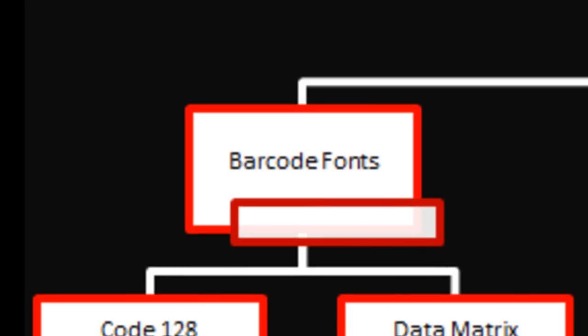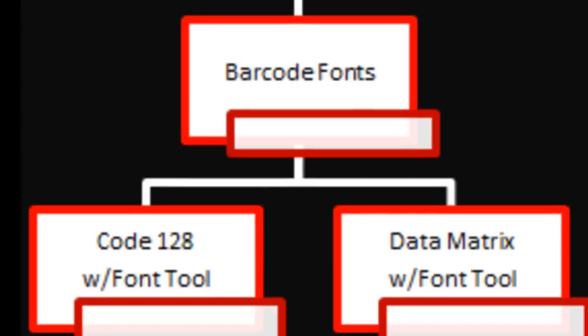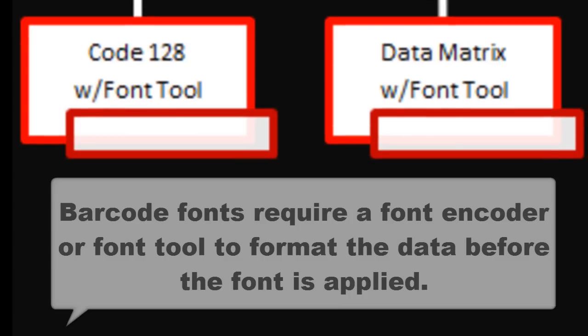Barcodes can be created using barcode fonts similar to Times New Roman or Arial. However, unlike Times New Roman and Arial, barcode fonts require special formatting so that when the barcode font is applied, it will be scannable. This is true for most barcode symbologies with the exception of Code 39 and a few others.